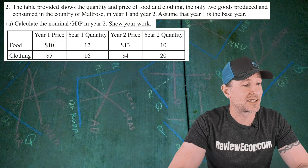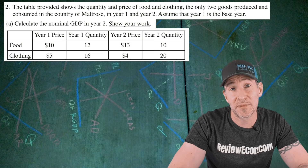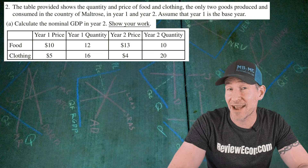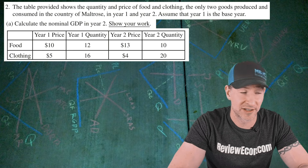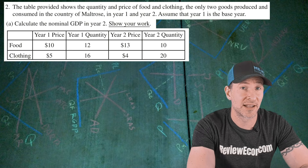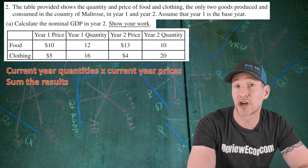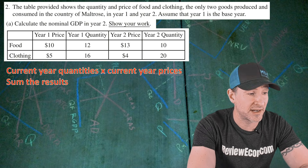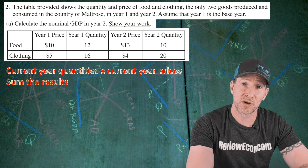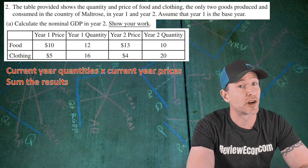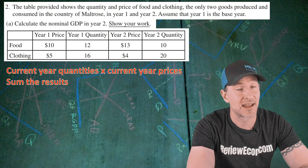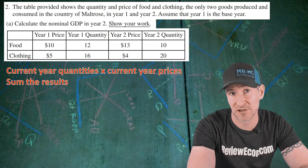For part A, we have to calculate the nominal GDP and we have to show our work. When it comes to calculating nominal GDP, we're going to use the current year quantities and multiply those by the current year prices, then sum the results.